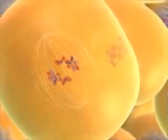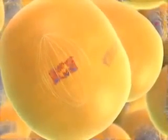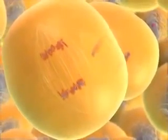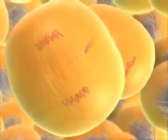In meiosis II, microtubules from opposite poles attach to the chromosomes, which then move to the center of the cell. Next, the sister chromatids separate, becoming full-fledged chromosomes that move to opposite poles.